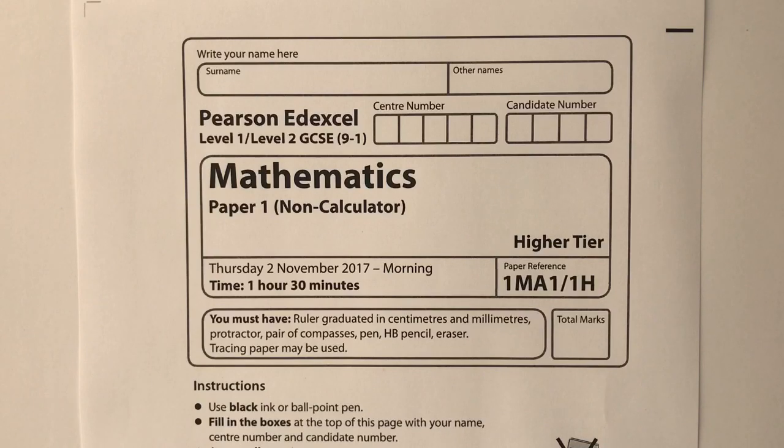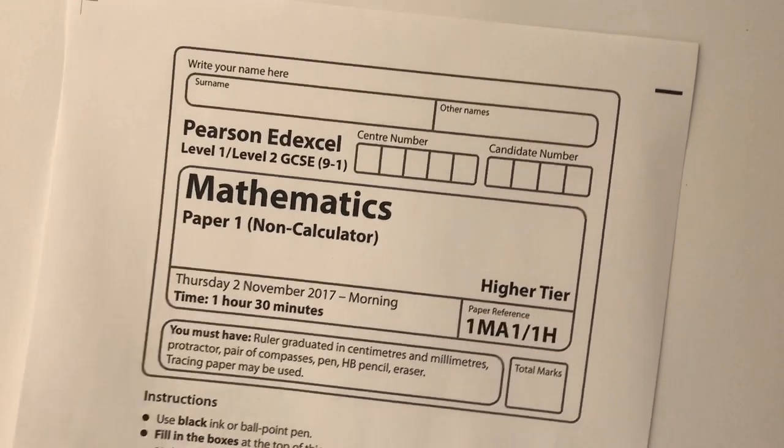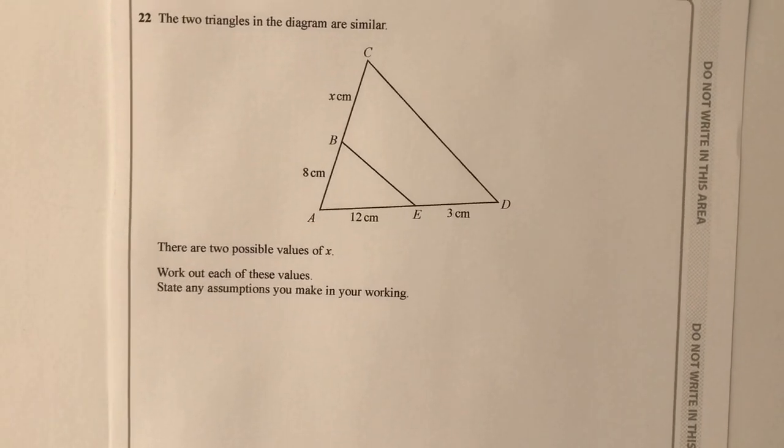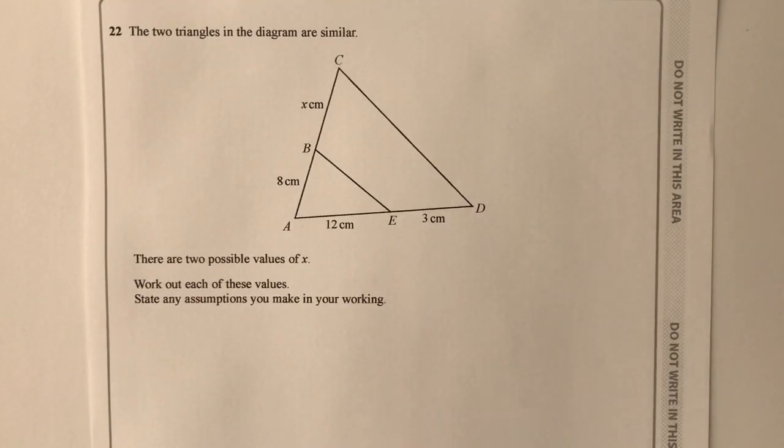Please do stop the video, have a go at each of the questions and then compare your solutions. So question number 22, we've got two triangles in the diagram are similar. Find the two possible values of X.